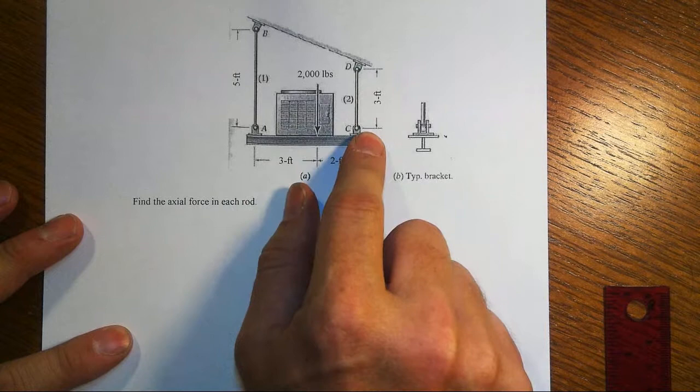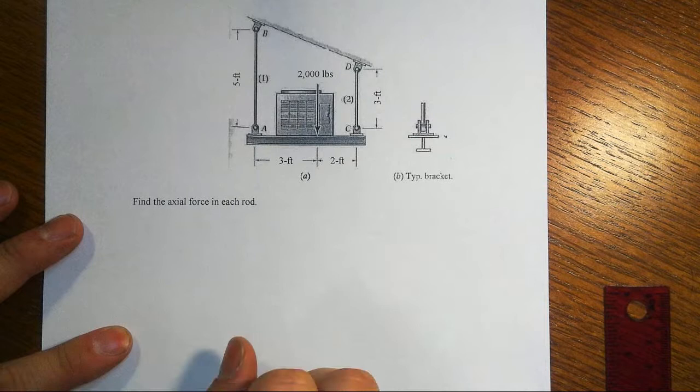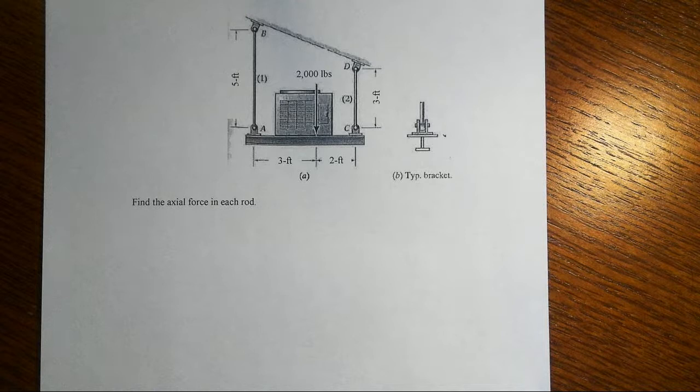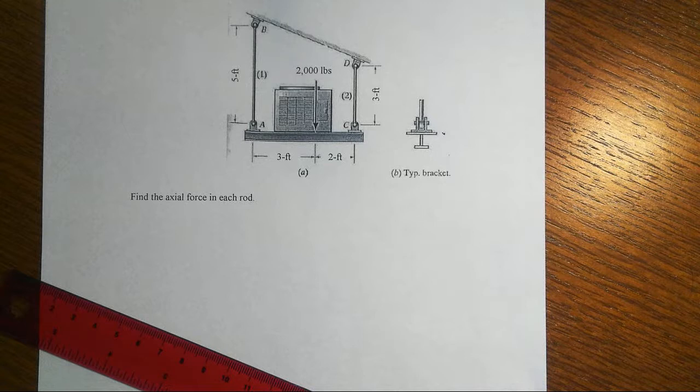We've got pin connections everywhere, and that does mean this thing could actually rock back and forth. Sometimes in our statics examples we have to ignore slightly some of the reality that might be there. That's true in this case - static equilibrium is only true for a special condition of applied forces.